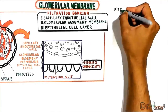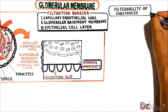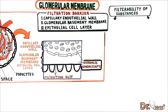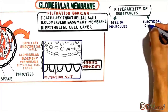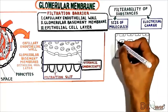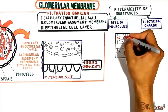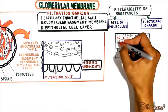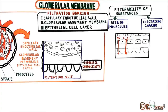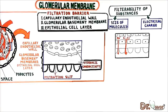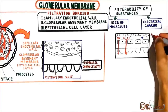It is extremely important to know that the filterability of substances by the glomerular membrane depends on two things: first, the size of the molecules, and second, the electrical charge on the molecule. Major electrolytes like sodium, chloride, potassium, and bicarbonate are easily or freely filtered because they have a small size compared to the pores of the glomerular membrane. The electrical charge of the molecule also affects filterability through the glomerular membrane.